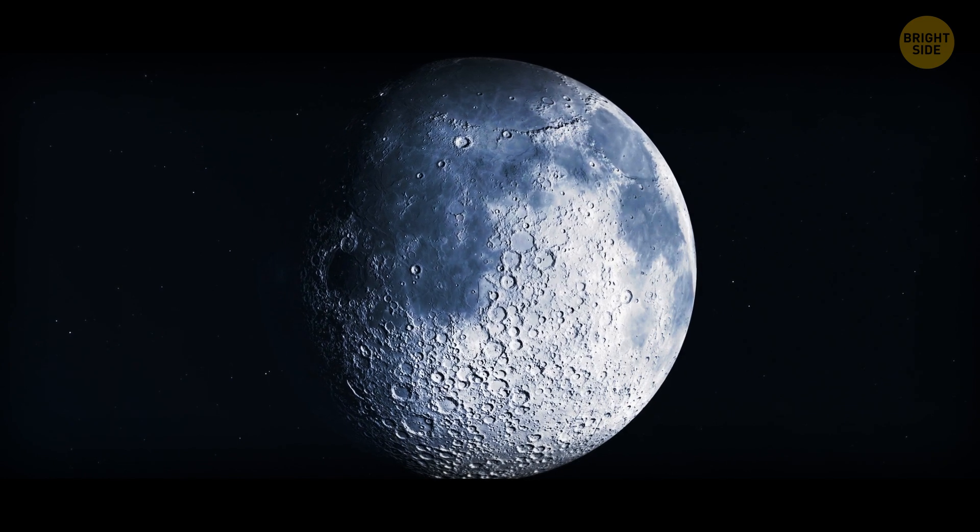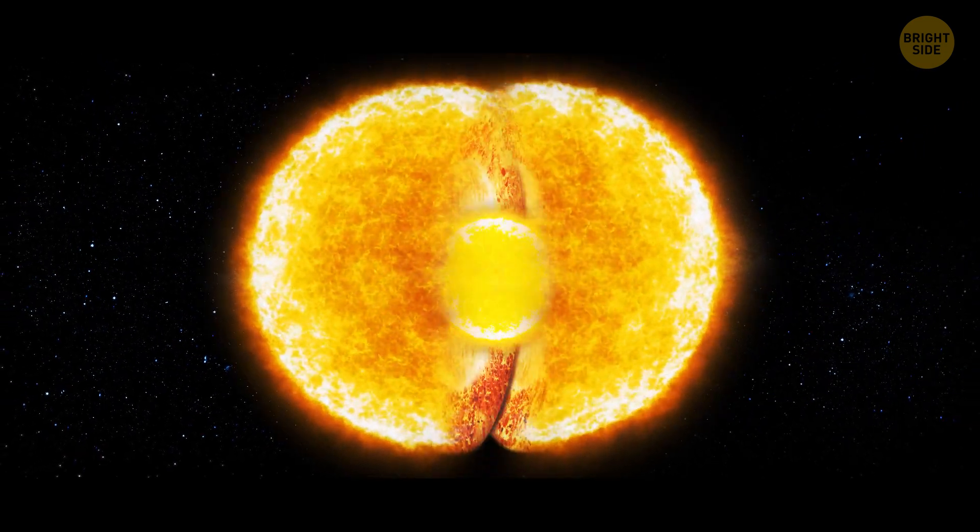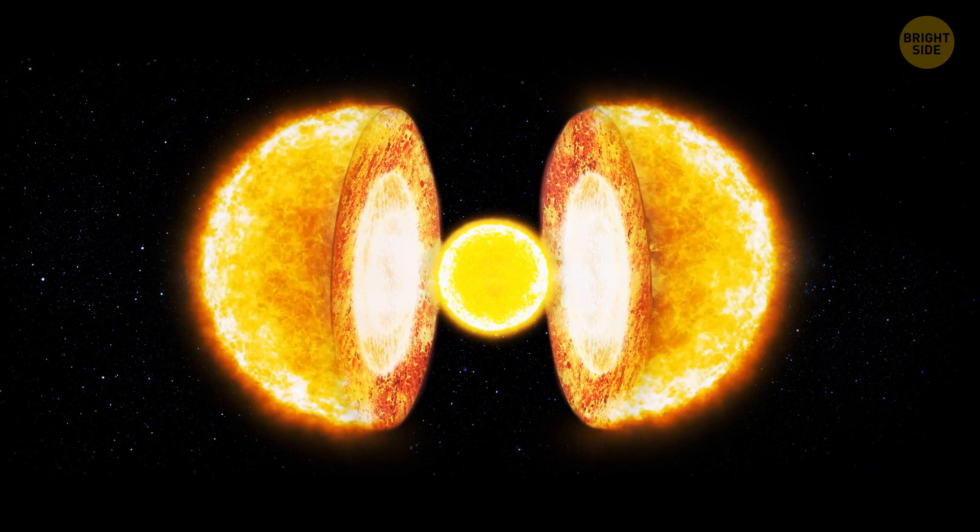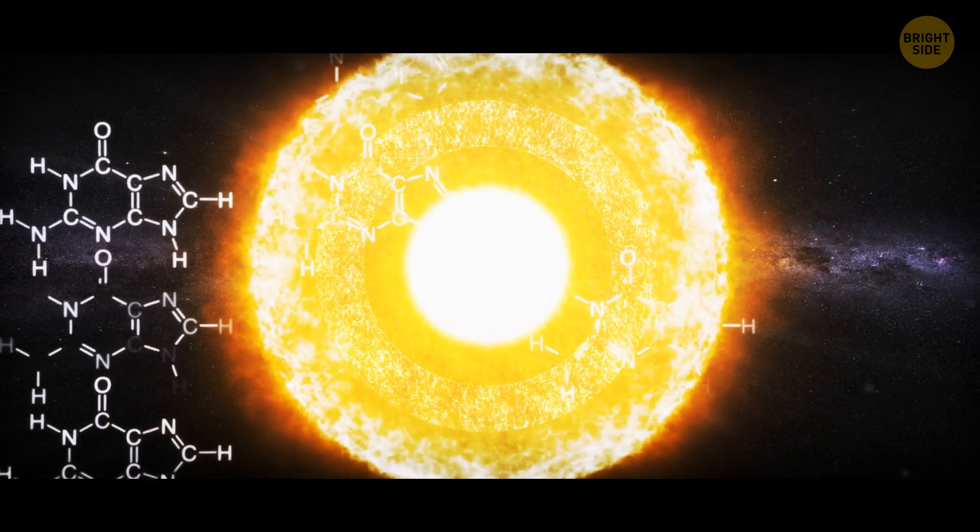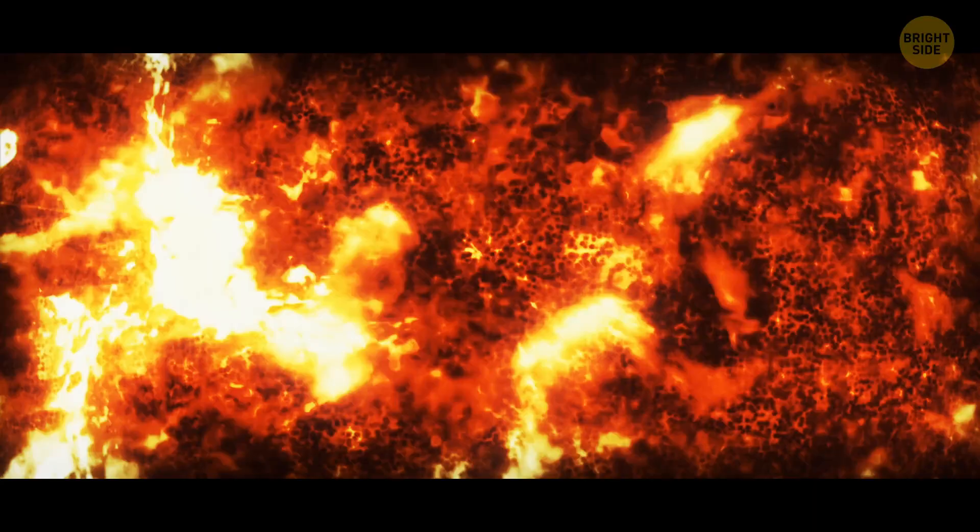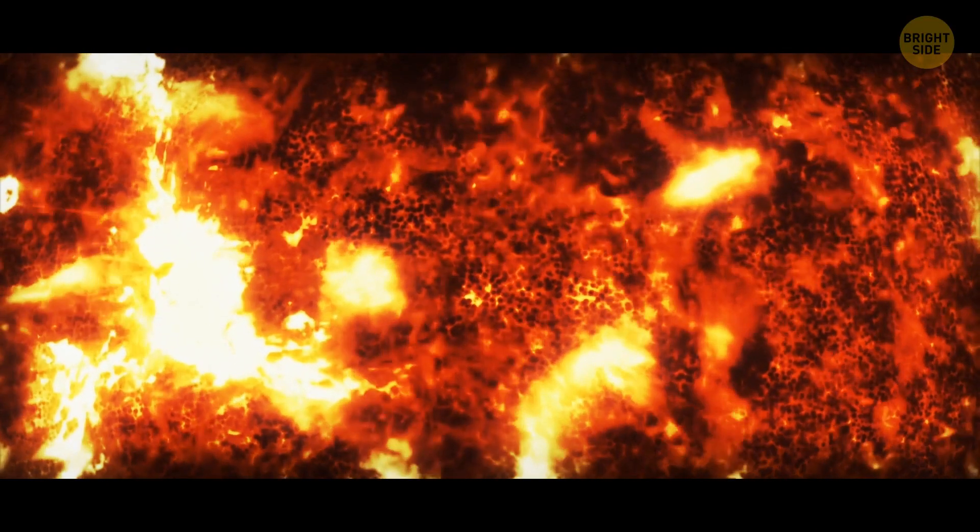How come our sun is hot while the moon is cold? The sun gives off heat because its core is extremely hot. In there, the pressure is pretty high. The hydrogen turns into helium. That's how the sun creates light and heat.